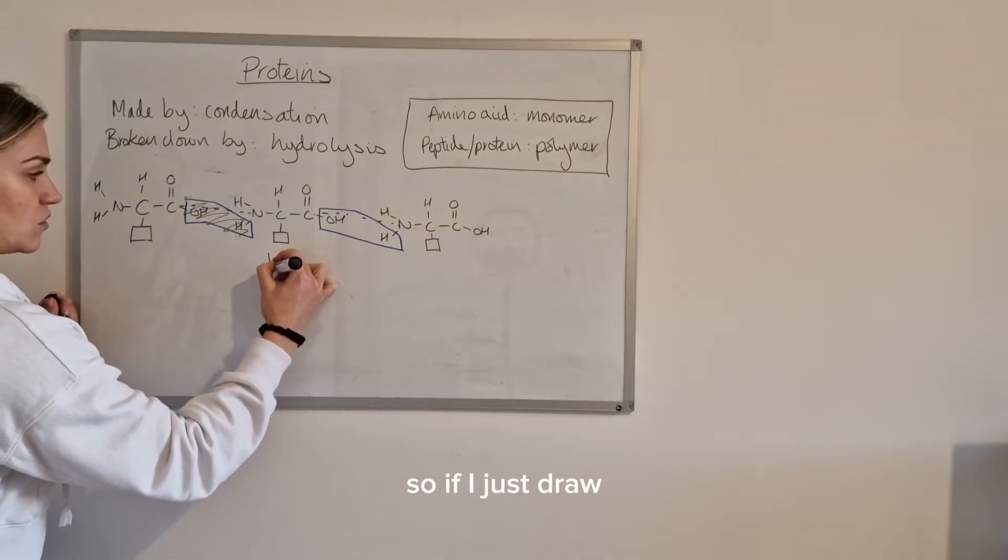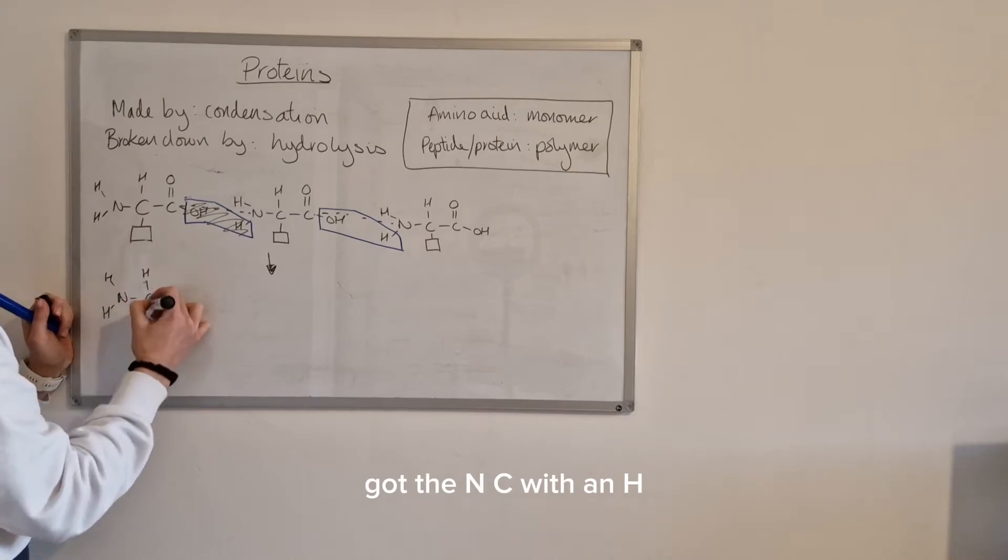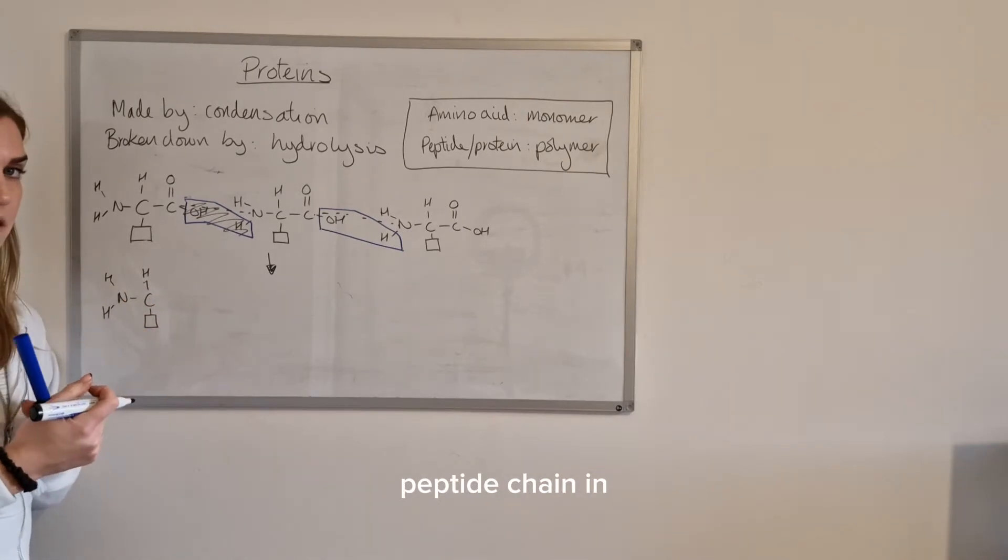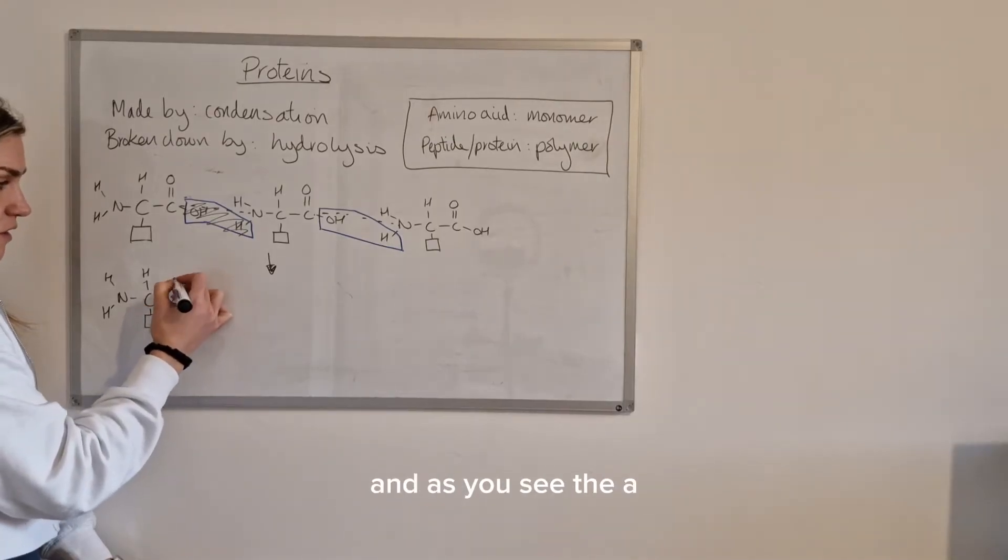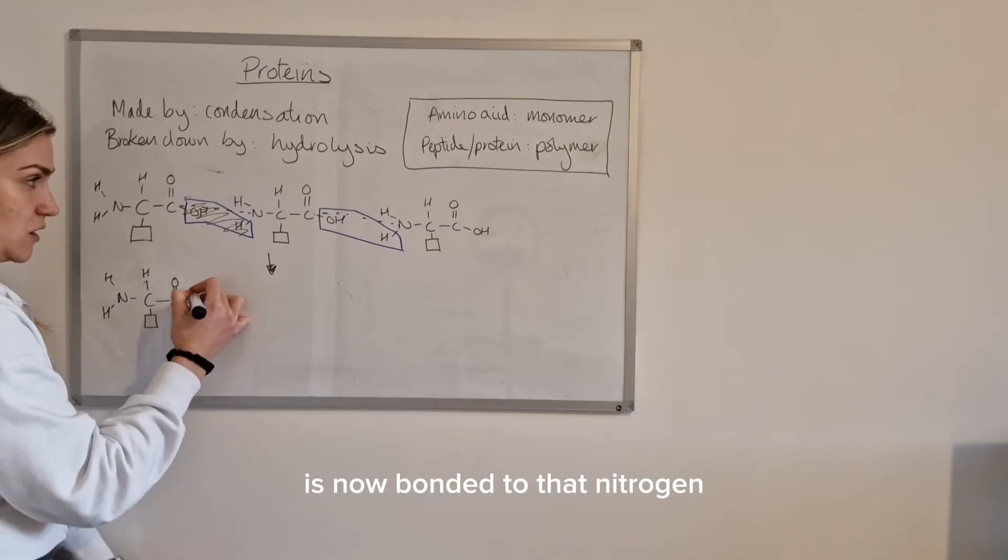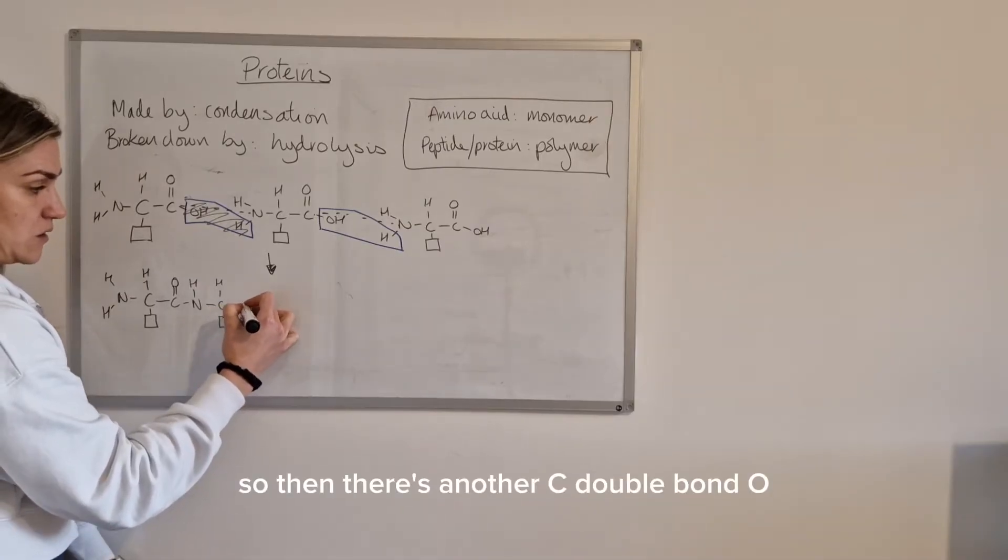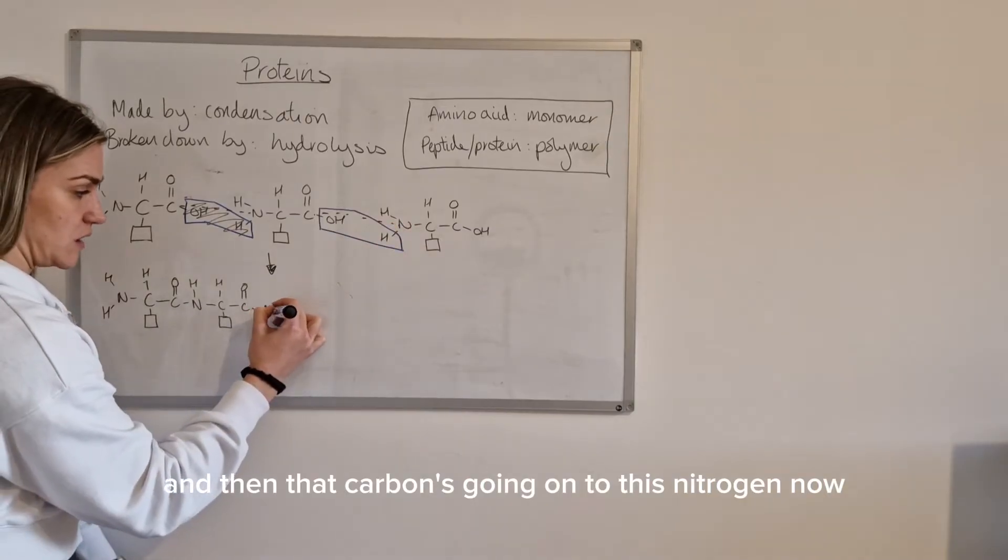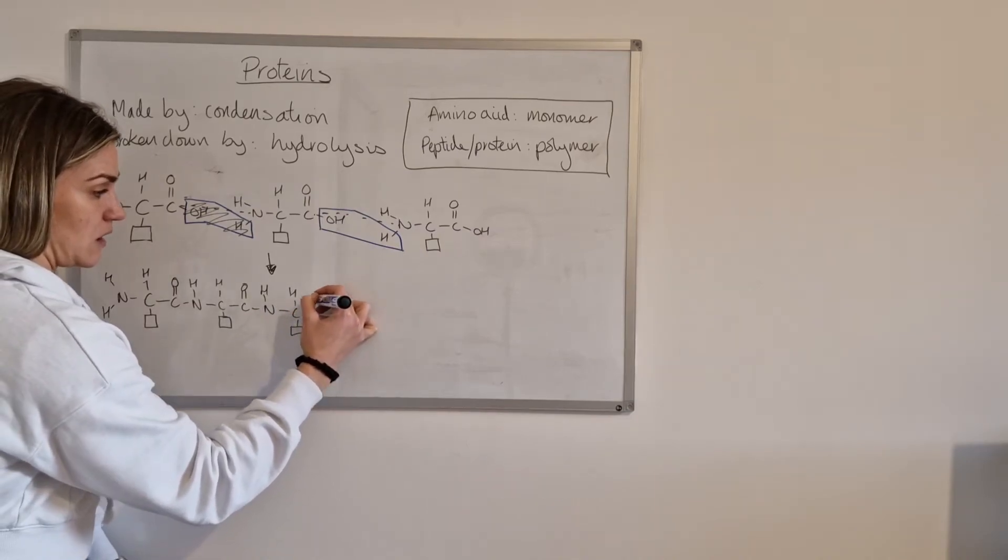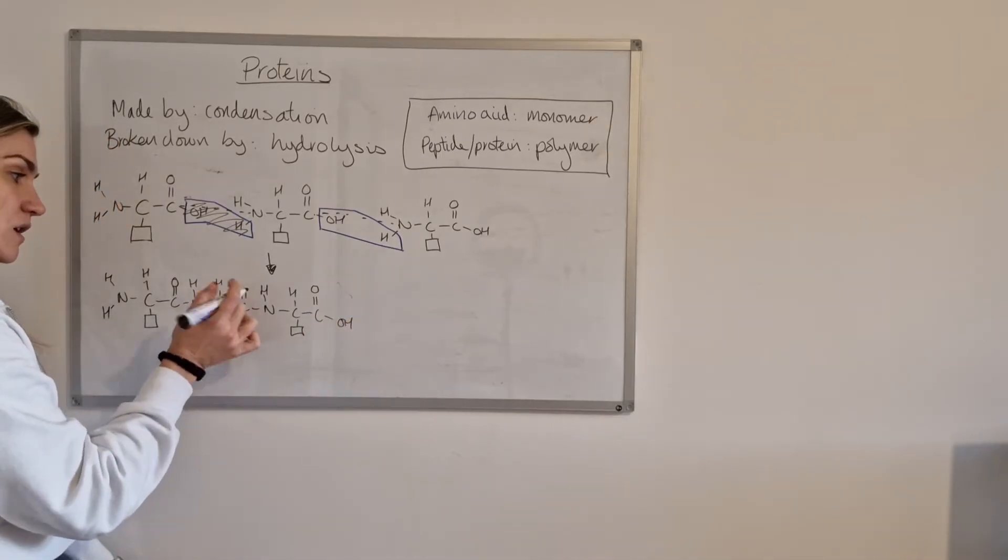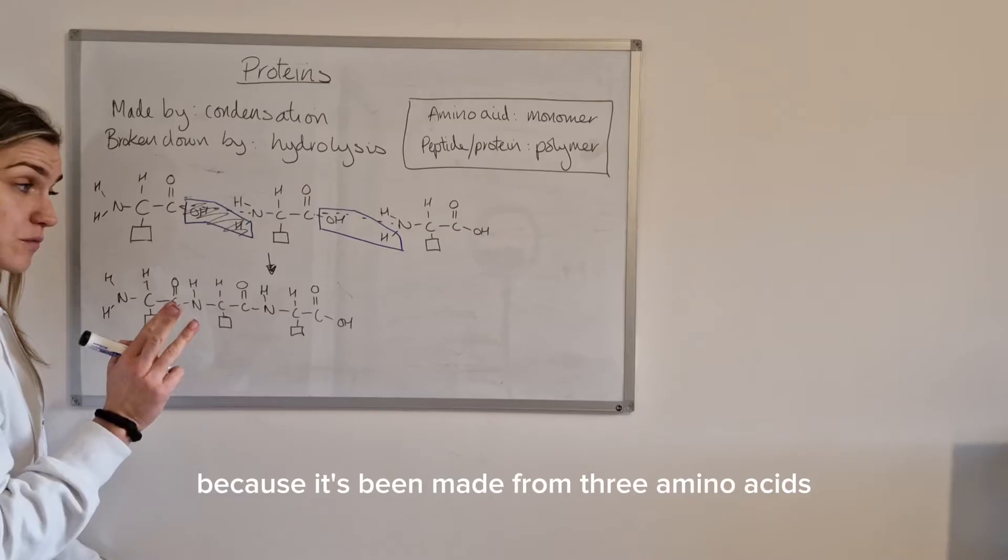So if I just draw what would be formed, start from this side. Got the NH with a square and if you're drawing a peptide chain in an exam from some given amino acids this is all you really need to do is just copy from left to right as you see the atoms. So that's what we've got and then this carbon we now know is bonded to that nitrogen which has got hydrogen on it and then you just keep going along copying down what's there. So then there's another C double bond O and then that carbon's going on to this nitrogen now and then that's on a carbon with a hydrogen on one of the R's again and then that carboxyl group at the end is not reacted with anything. Okay so this is a peptide chain and it's specifically a tripeptide because it's been made from three amino acids.